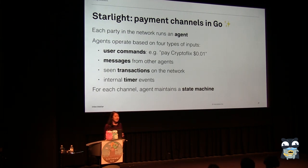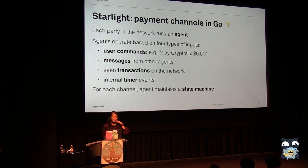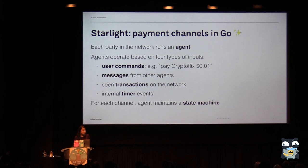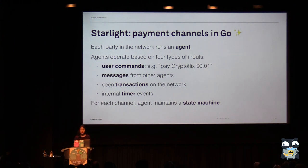In our Starlight implementation, a party on the network runs what's called an agent. Agents respond to four different types of inputs: user commands like 'I would like to pay CryptoFlix one cent,' messages from other agents such as incoming payment requests, transactions seen on the network, or timer events. Each agent maintains a set of state machines for each of the channels they have open.